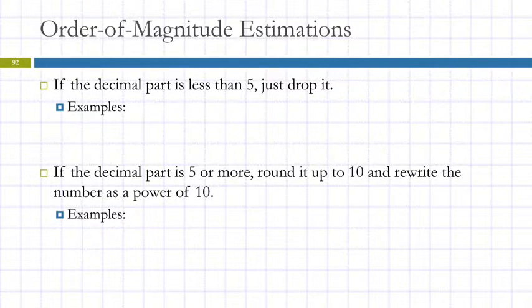So let's just make up some examples. What if we're dealing with 4.29 times 10 to the 4th meters? To do an order of magnitude estimation, I'm going to look at this part of the number and say, well, that's less than 5. So I'm going to say this is approximately 10 to the 4th meters.